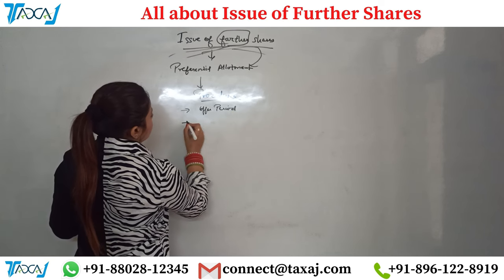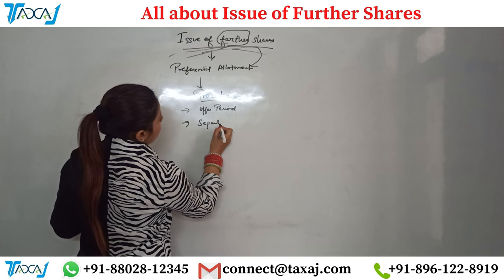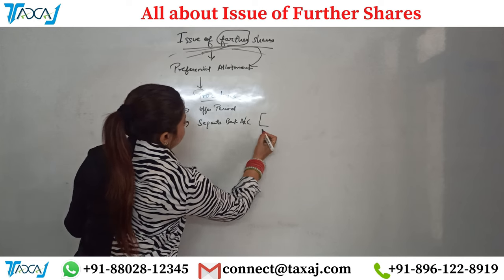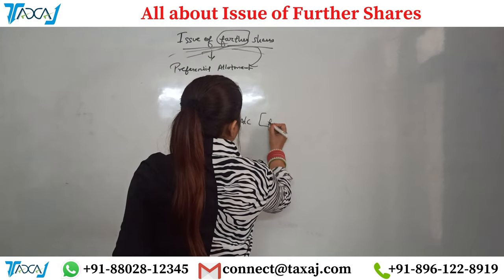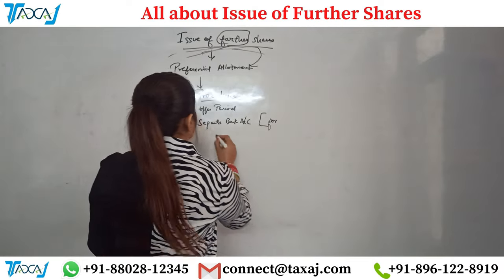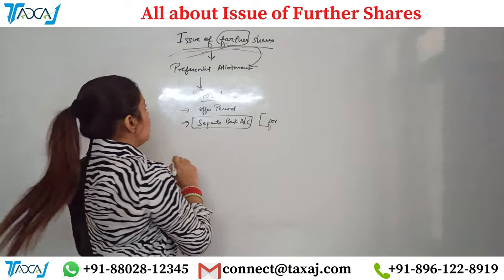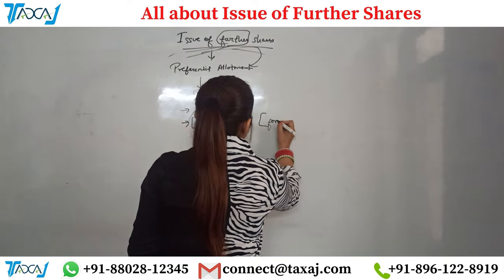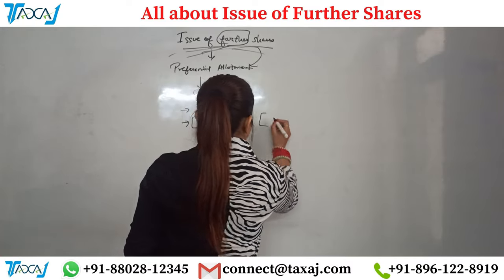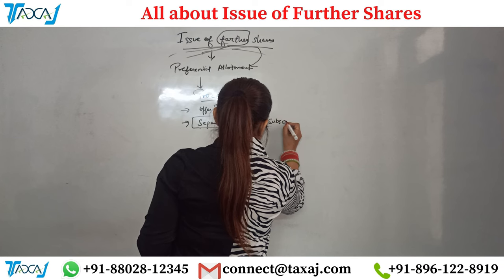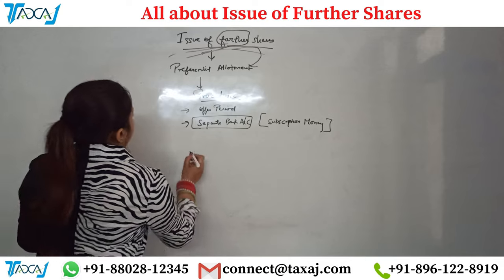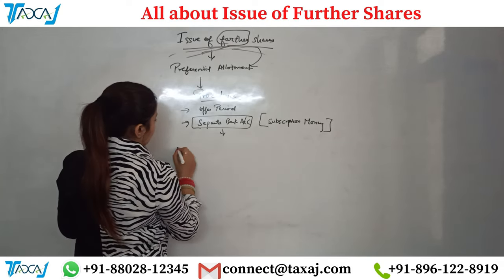After the offer period is decided, you need to open a separate bank account for receiving the subscription money. You cannot collect money in the company's existing account or in a director's personal account — a separate bank account must be opened specifically for the share issuance. Until allotment is completed, the subscription money received will be deposited in this separate account.